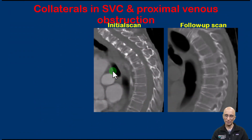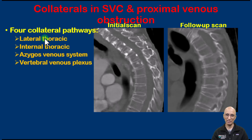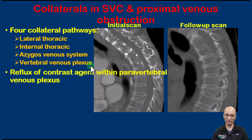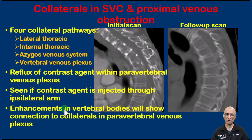Essentially, what is happening here is that our patient had proximal venous obstruction due to the thymoma encasing the brachiocephalic vein, which led to the formation of numerous collateral vessels. In the setting of obstruction of the SVC or the brachiocephalic venous system, we can see four collateral pathways: lateral thoracic, internal thoracic, azygous venous system, and vertebral venous plexus. The vertebral venous plexus collateral system is most relevant here, as reflux of contrast within the paravertebral venous plexus — commonly seen when contrast is injected through the affected side — leads to apparent pathological enhancement of the vertebral bodies, with enhancing foci connected through the paravertebral venous plexus as seen on the MIP images.